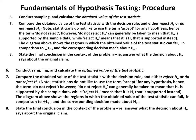In step 6 we conduct the sampling and calculate the obtained value of the test statistic. In step 7 we compare the obtained value with the decision rule and either reject H₀ or do not reject H₀. Statisticians generally do not use the term 'accept' for any hypothesis; 'do not reject' is used instead. However, 'do not reject H₀' can generally be taken to mean that H₀ is supported by the sample data, while 'reject H₀' means Hₐ is supported.